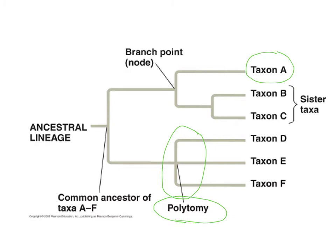We also have sister taxa — groups that share an immediate common ancestor. B and C here are an example of sister taxa. Even though A shares a common ancestor with B and C further back, they are not sister taxa because B and C have a more recent common ancestor. So B and C are considered sister taxa.